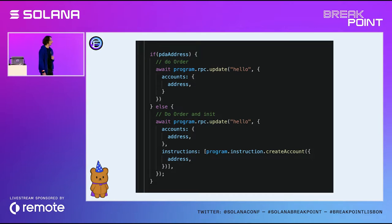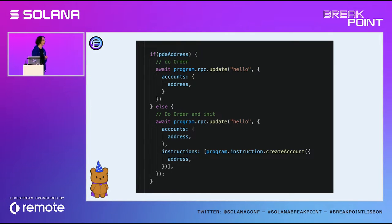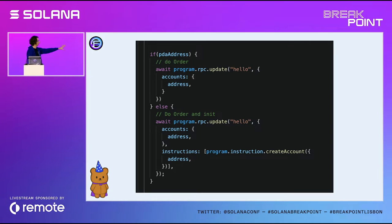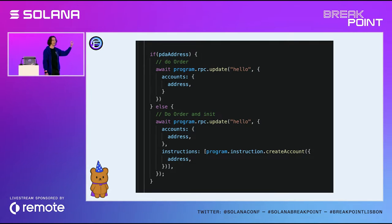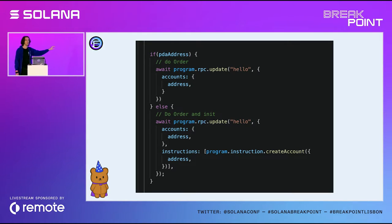Anchor built something called init-account-if-needed — I'm not sure on the exact terminology. But that's primarily not to solve this UX issue — it's to solve the problem when two transactions go into a blockhash at the same time and you're trying to create an account twice and one will fail. So while it does handle this, I would still recommend using the PDA check pattern. But maybe Armani can talk about that more.